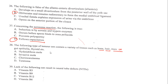The following type of tumor can contain a variety of tissues such as bone, hair, muscle, gut epithelia, thyroid, and many others — this can be seen in a teratoma. Lack of which of the following can result in neural tube defects? The answer is vitamin B12; lack of vitamin B12 can result in neural tube defects.